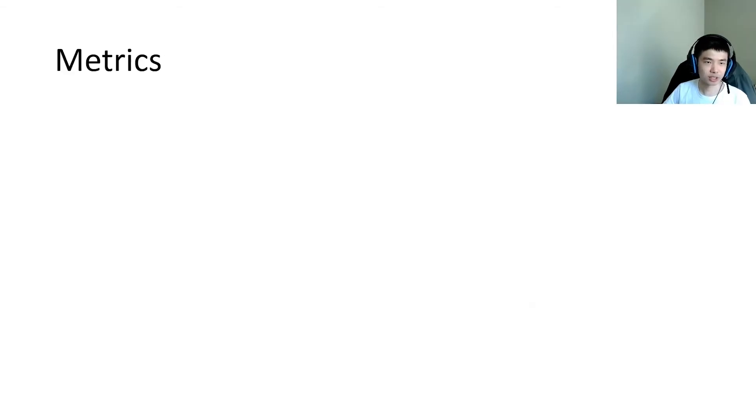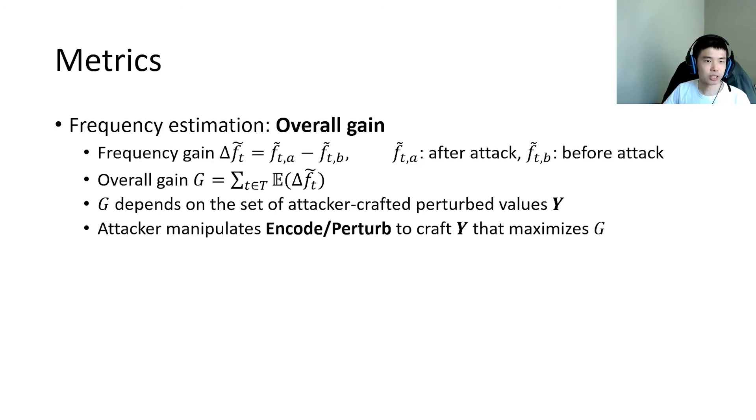We use different metrics for our attacks in different applications. For frequency estimation, we define frequency gain as the difference between the estimated frequency before and after attack. We use overall gain as our metric, which is defined as the sum of the expectations on the frequency gains.